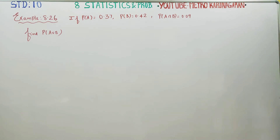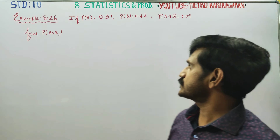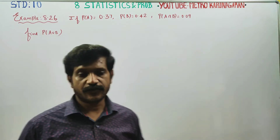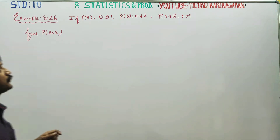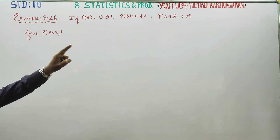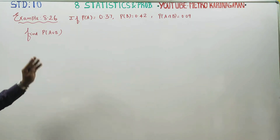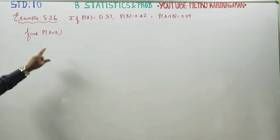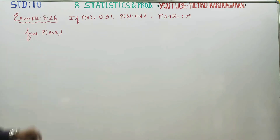Dear 10th standard students, I am Metro Karanagaran. In example 8.26, if probability of A, B, and A intersection B are given, find the probability of A union B.